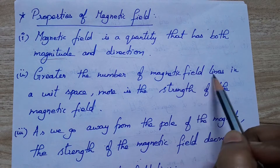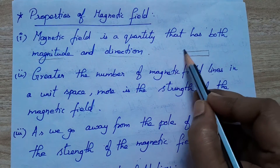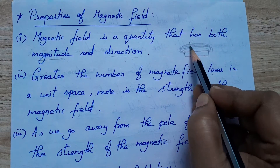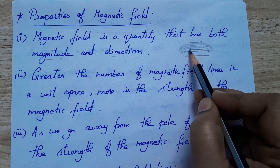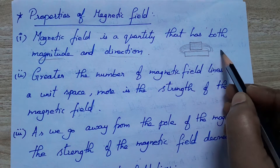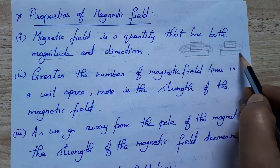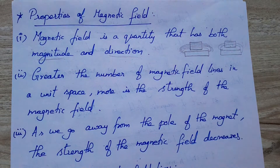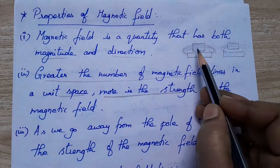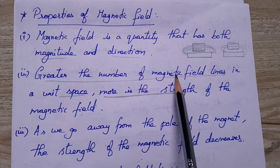Greater the number of magnetic field lines in a unit space, more is the strength of the magnetic field. If so many lines are passing through a unit space, the magnitude of the magnetic field will be more. If only a few lines are crossing, the strength of the magnetic field is very less. More magnetic lines means more strength; less means less strength.